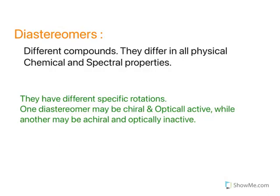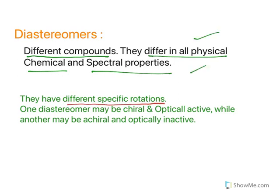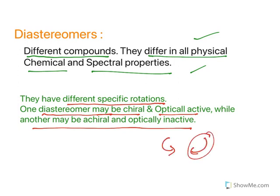Diastereomers are different compounds — they differ in all physical, chemical, and spectral properties. It is not like enantiomers, which are the same in physical and chemical properties. Diastereomers have different specific rotations. One diastereomer may be chiral and optically active while another may be achiral or optically inactive — they are not related in that way. Enantiomers are different: if one is dextrorotatory, the other will be levorotatory with the same magnitude. But diastereomers are not like that — they differ completely in physical, chemical, and spectral properties, and have different specific rotations.